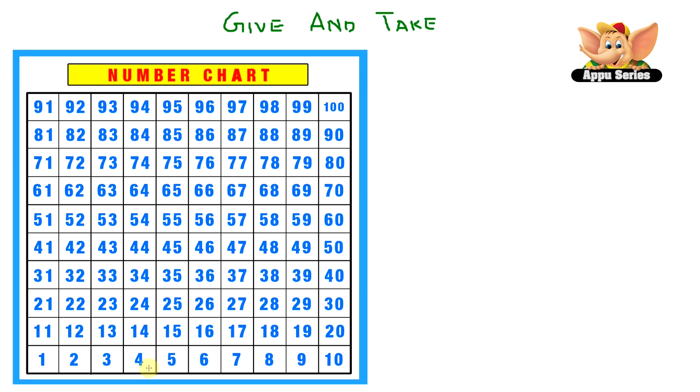Now using this number grid, let's first see how we can jump from 4 to 14. We can move from 4 like this: 1, 2, 3, 4, 5, 6, 7, 8, 9, 10.